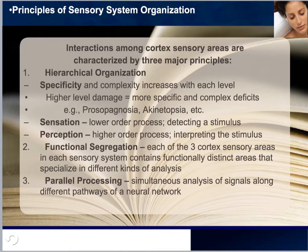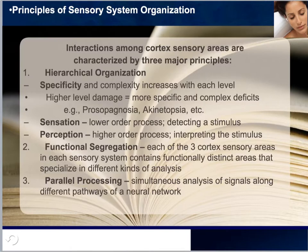As we go up — meaning toward the association cortex, secondary, and primary — the specificity and complexity increases with each level, and higher-level damage typically results in more specific and complex deficits. For example, if we damage the eye or retina, we might simply correct it with laser surgery or eyeglasses. However, if we damage the relevant part of the brain, things become more complex and we start seeing disorders such as prosopagnosia — the inability to recognize faces — and akinetopsia, another neurological disorder examined in Chapter 6.